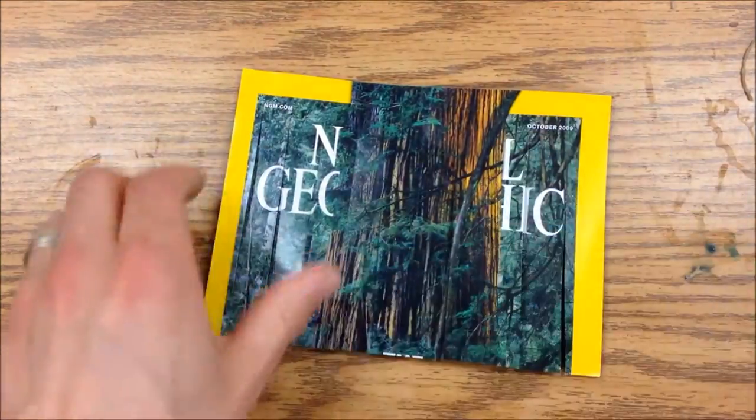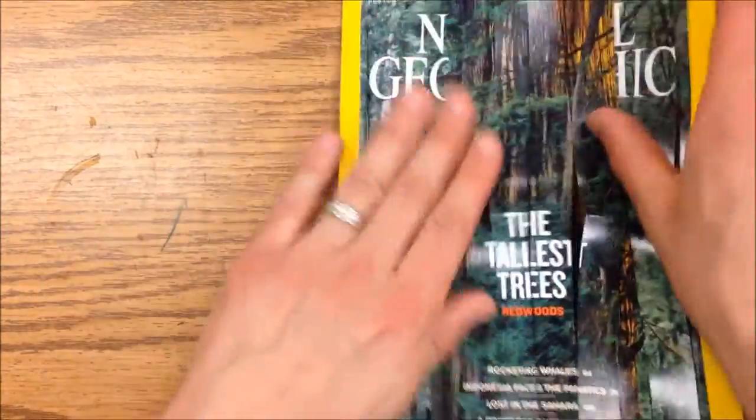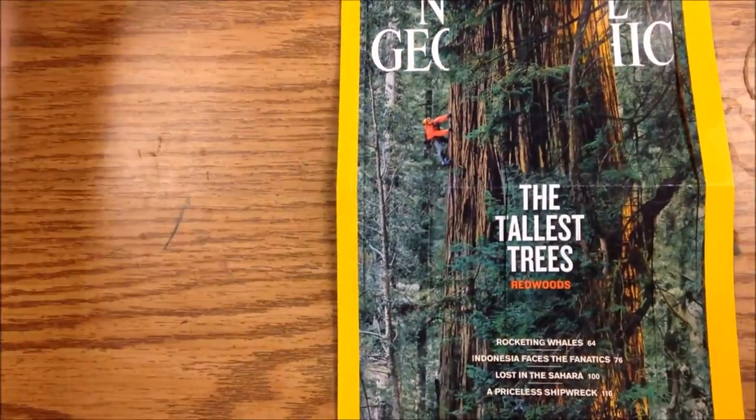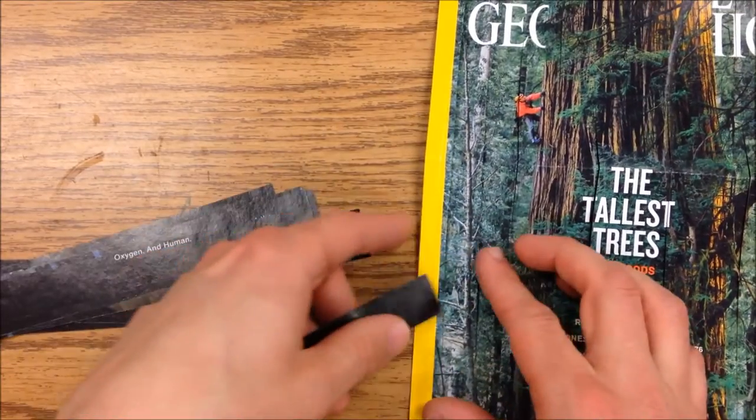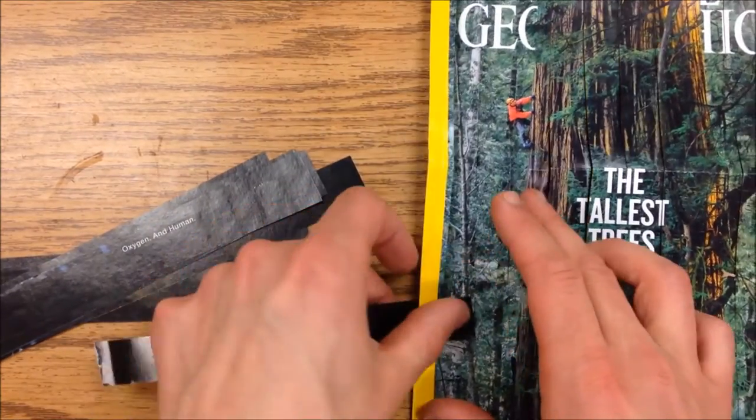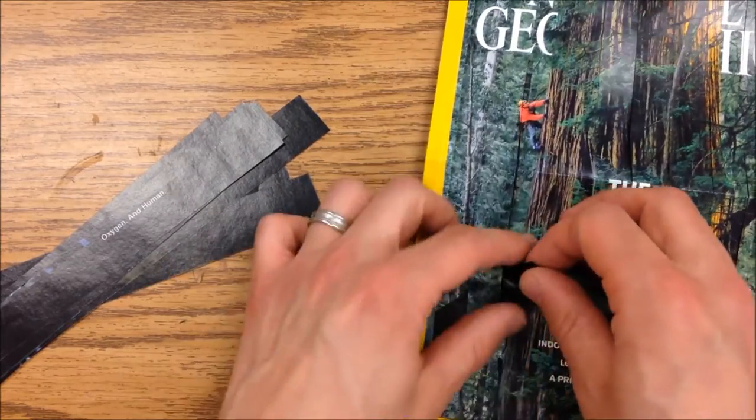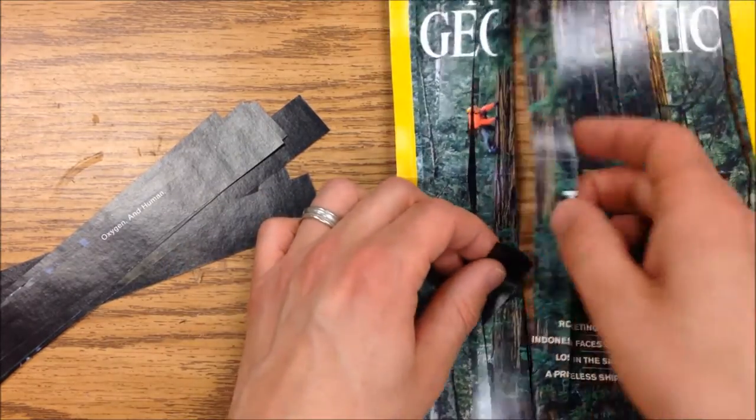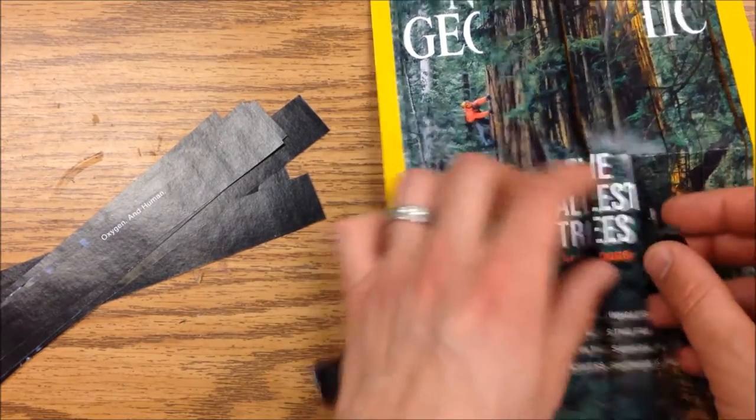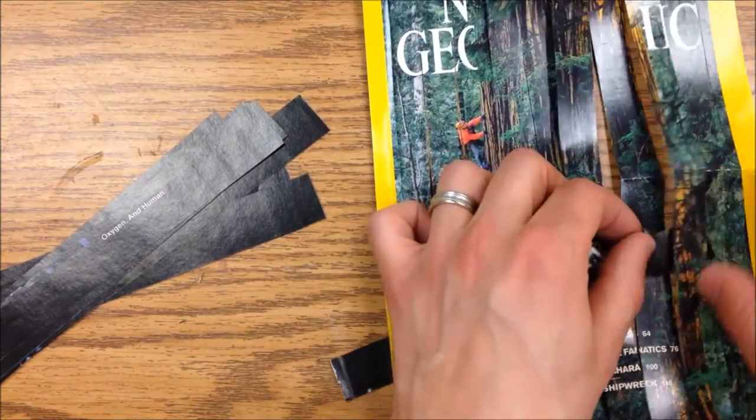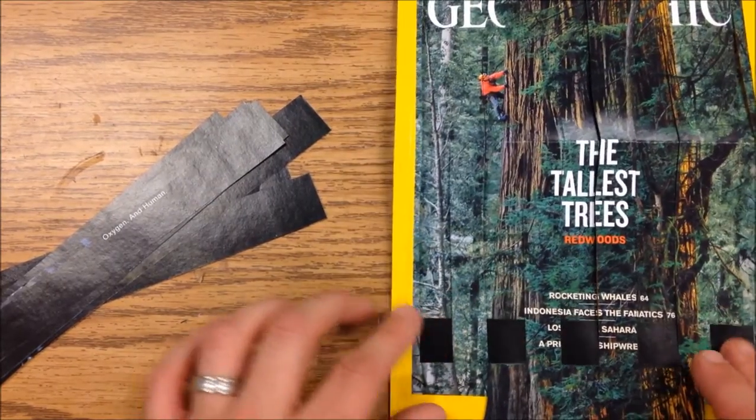Open them up and you have vertical strips to weave into. Take some of these and begin by going under and over. Push that all the way down.